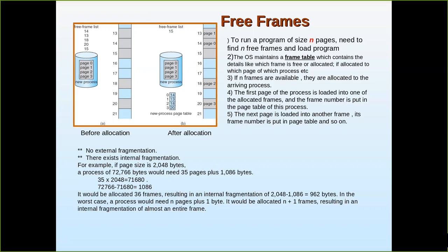In contiguous memory allocation, the user process must be in continuous memory. For example, if the user process is 512 bytes, all 512 bytes must be in contiguous memory — you cannot allocate 100 bytes here, then another 100 bytes elsewhere. That is the drawback of contiguous allocation, and the whole user process must be present there.